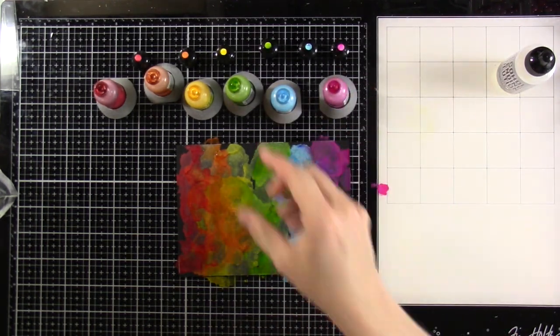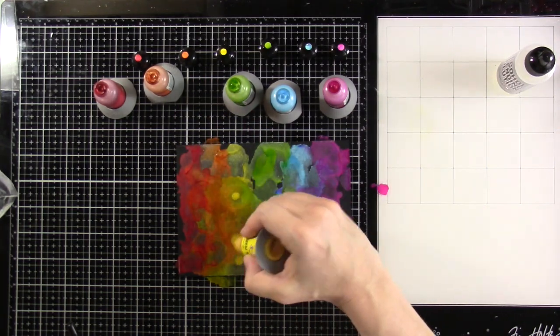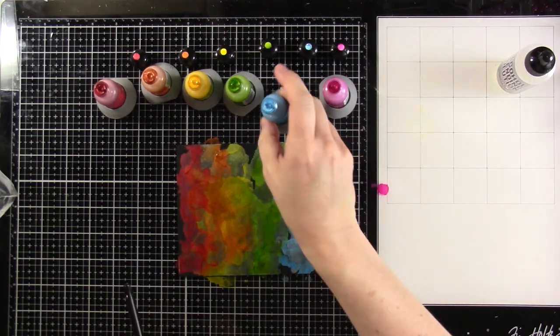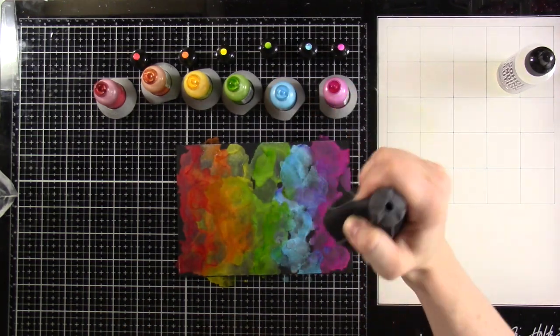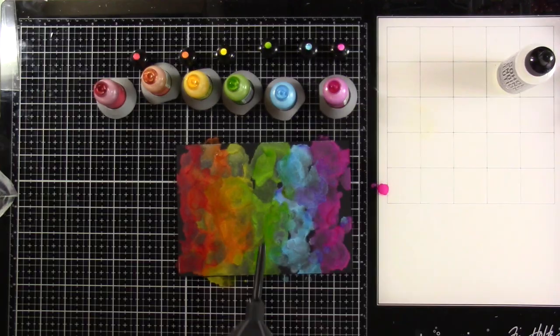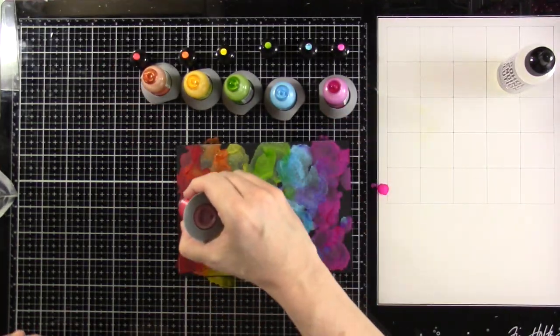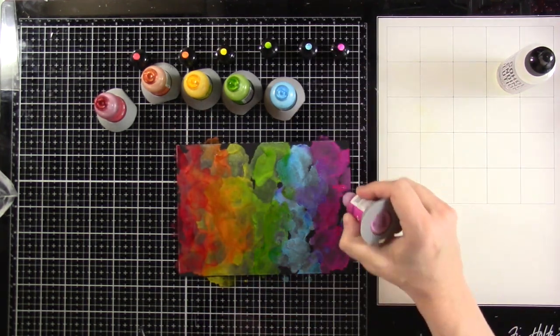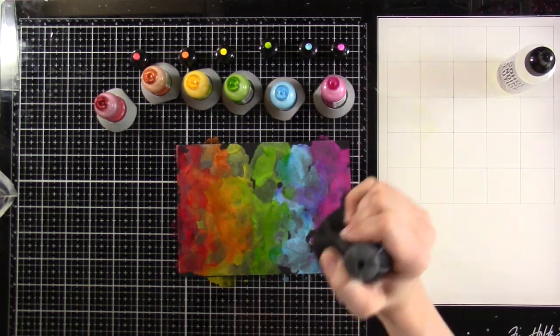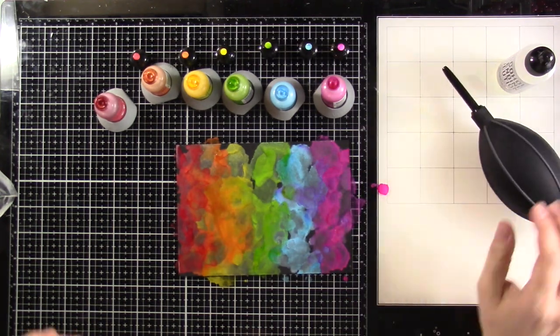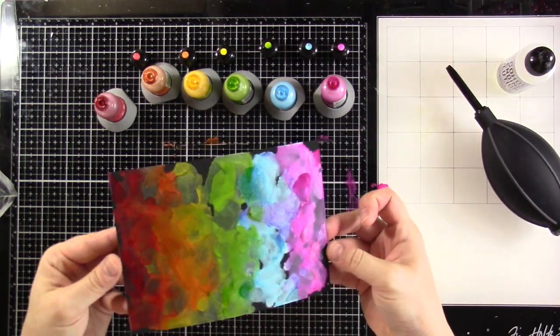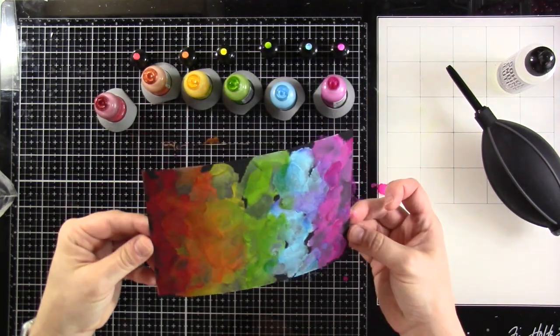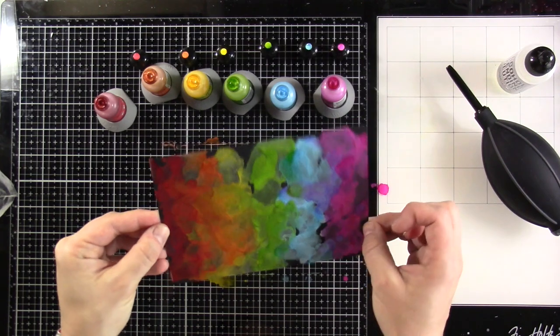And you'll notice I'm just kind of swishing that around with that ink blower as well. And I keep adding more to add more texture. But I love how these pearls look on top of that black cardstock. It's so, so pretty. And you could go and leave a lot more black showing, but I really didn't want to.